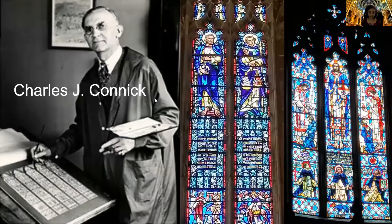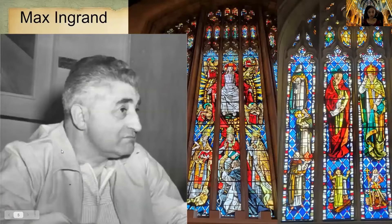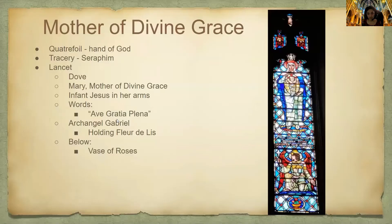Two artists depicted in the transepts are Charles J. Connick and Max Ingrand of Paris. Max Ingrand is the bigger windows, which we will go over in the next video. The conic windows are the smaller windows in the transepts. The first three windows, which are in the south transept, are devoted to the Virgin Mary. When you look up at those windows, you'll see that the prevalent color is blue.